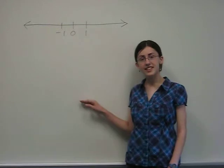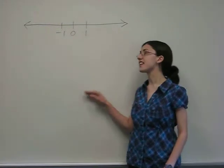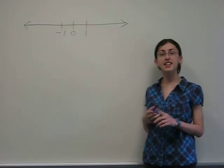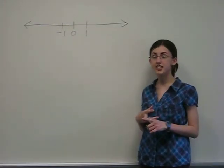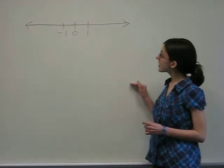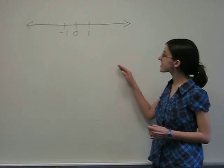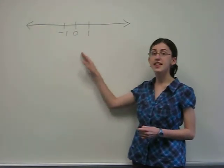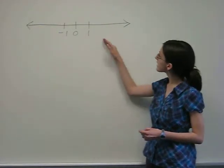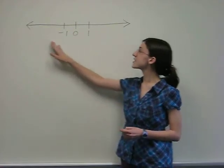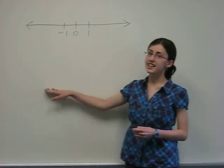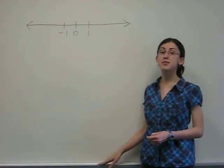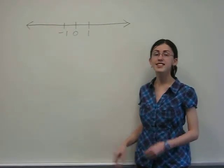Goods that do not fit into these three special categories can be categorized as elastic or inelastic. If a good's elasticity is between negative one and one, it is inelastic, whereas if it is anywhere outside of this range, it is elastic. The further from zero it is, the more elastic it is.